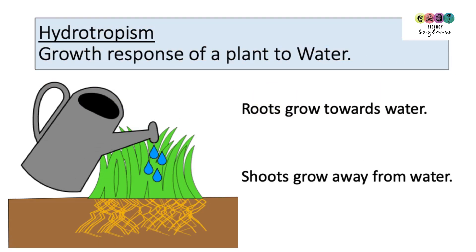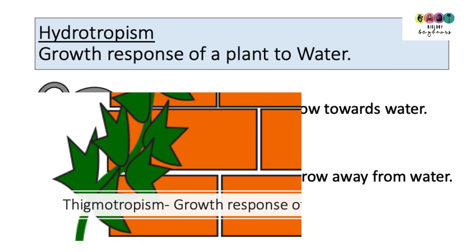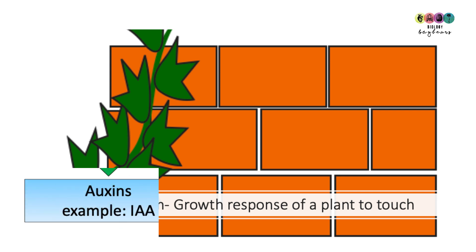Hydrotropism is the growth response of a plant to water. The roots will always grow towards the water and the shoots away, so roots are positively hydrotropic and shoots negatively hydrotropic. Thigmotropism is the growth response of a plant to touch — think of ivy climbing up a wall or climbing roses, which have tendrils in their stems that wrap around whatever they touch.